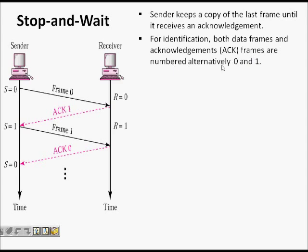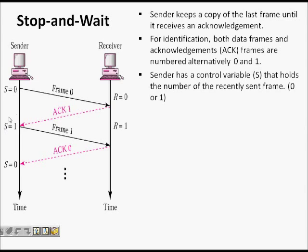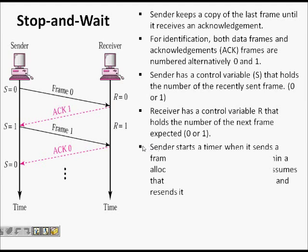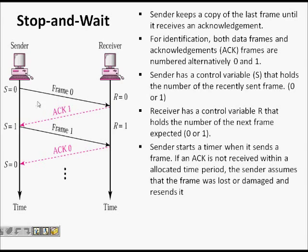For identification, both data frames and acknowledgement frames are numbered alternately — just frame zero and frame one. The sender has control variable s: when sending frame zero, s is zero; when sending frame one, s is one. The receiver's variable r always equals the next frame it wants to receive. The sender also starts a timer when it sends a frame.